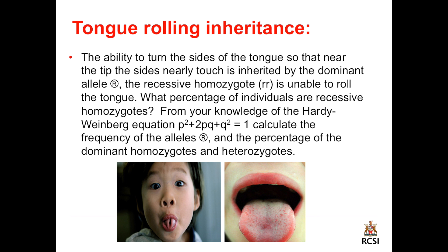What percentage of individuals are recessive homozygous? From your knowledge of the Hardy-Weinberg equation p squared plus 2pq plus q squared equal 1, calculate the frequency of the alleles and the percentage of the dominant homozygous and heterozygous.